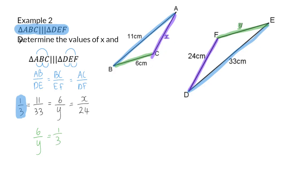To simplify the algebra, I am now going to get the reciprocal on both sides and say that Y over 6 is equal to 3 over 1. Therefore, we know that Y will be equal to 3 times 6, and that means it is 18 centimeters.